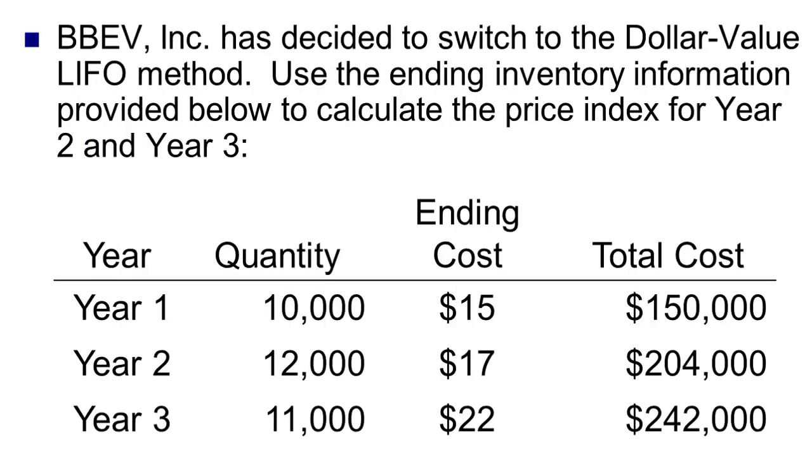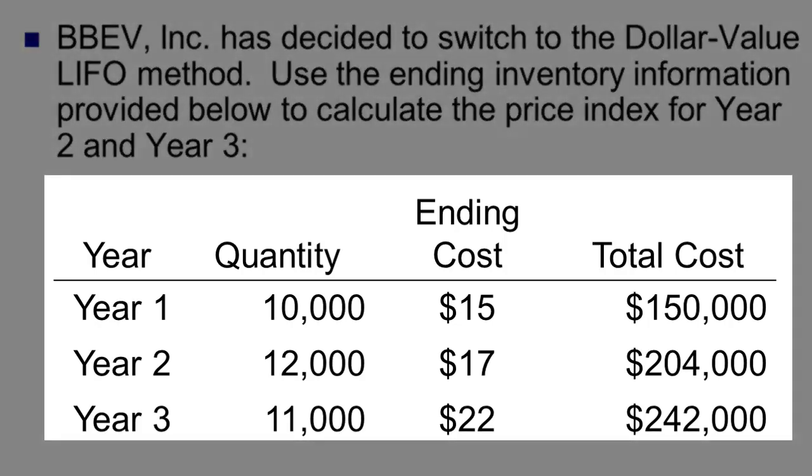Let's take a look at an example that I think will make this much more clear. This is BBEV. They've decided to switch to dollar value LIFO, and here's the information. In year one, they had 10,000 units on hand and they were paying $15 a unit for that inventory. In year two, they had 12,000 units on hand and were paying $17 a unit. In year three, they've dropped to 11,000 units and the cost is now $22 a unit. So prices just keep getting bigger and bigger, which is pretty normal for an inflationary system.